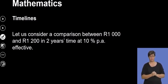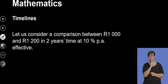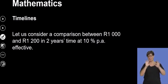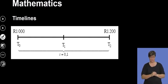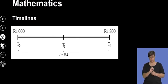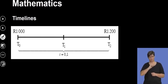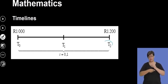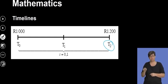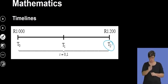Let's consider a comparison between R1 000 and R1 200 in two years' time at a ten percent effective interest rate. On the number line, at t0 the person puts in R1 000. At t1 nothing happens — they are still gaining interest. At t2 the amount becomes R1 200, so we need to look at what exactly this means.